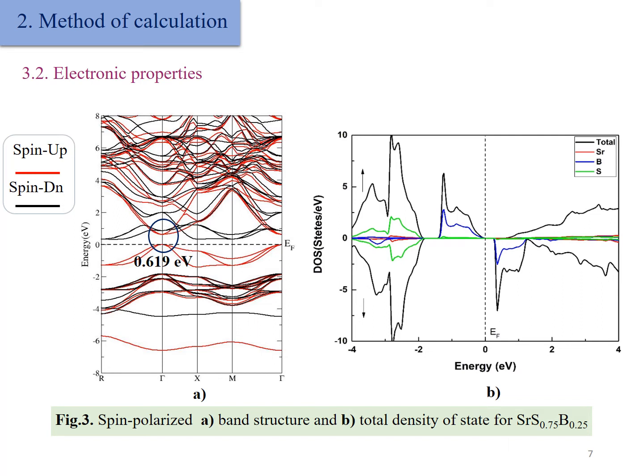The strong p-p interaction between p-states of anion atoms and p-states of the doped element is responsible for the resulted magnetic character in this compound.